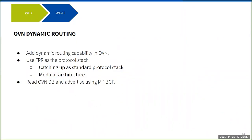What are the key properties we expect in native dynamic routing support in OVN? We want to add dynamic routing natively in OVN and use FRR as the protocol stack. Why FRR? Mostly because FRR is becoming a standard protocol stack. Since we are adding this capability for the first time in OVN, we want to start with a stack that we think is going to be evolving, more futuristic, and something which is being widely adopted.